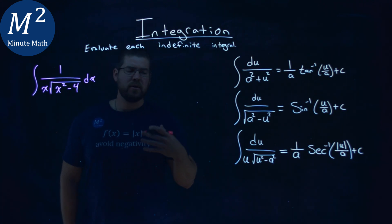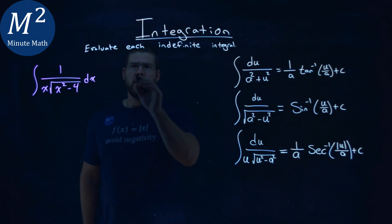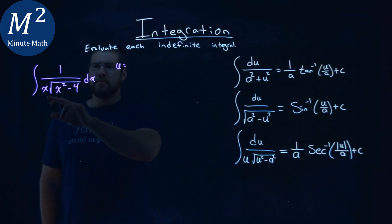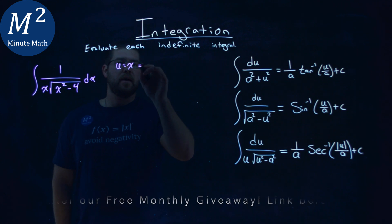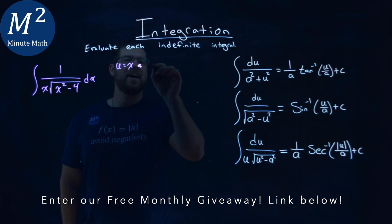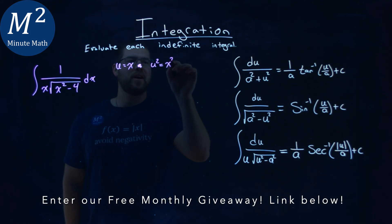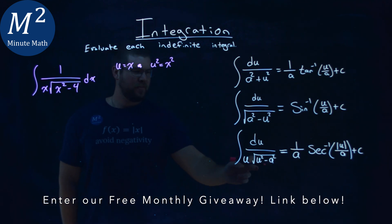So let's go find what an a value and u value can be here. Well, if I find a u value to be just x, u squared is x squared right there, okay? Lines up pretty good.